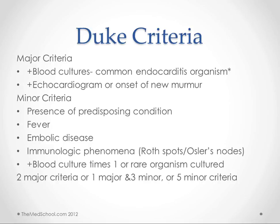So you might have a positive blood culture, embolic disease, fever, and some of these Roth spots, but you can't make a positive echocardiogram — and that would be enough to call it infective endocarditis. Or if you have all five of the minor criteria, that works too.